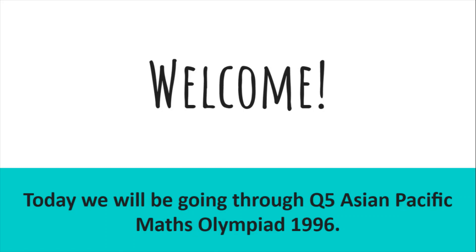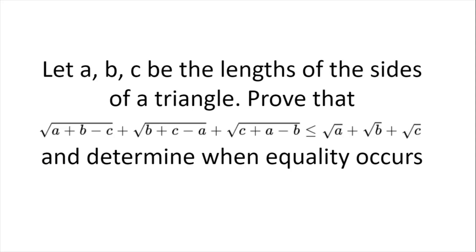Welcome! Today we'll be going through question 5 from the Asian Pacific Maths Olympiad 1996. Let a, b and c be the lengths of the sides of a triangle. Prove that the square root of a plus b minus c, plus the square root of b plus c minus a, plus the square root of c plus a minus b is less than or equal to the square root of a plus the square root of b plus the square root of c, and determine when equality occurs.